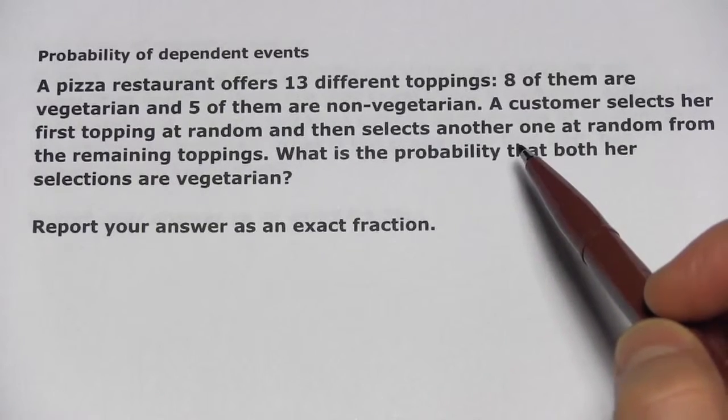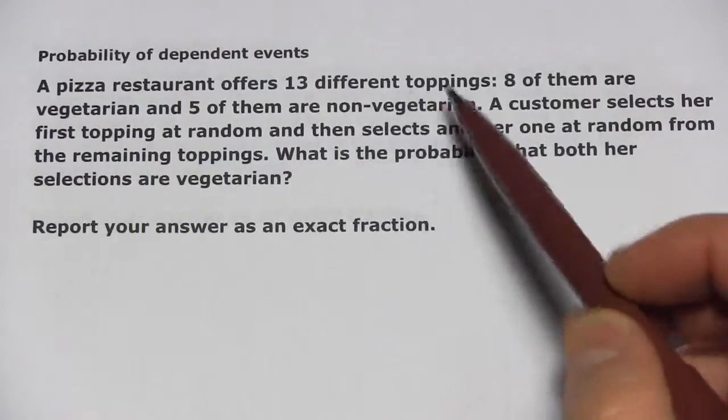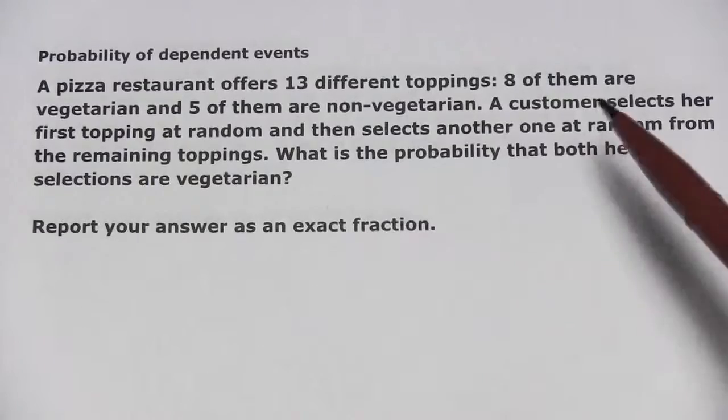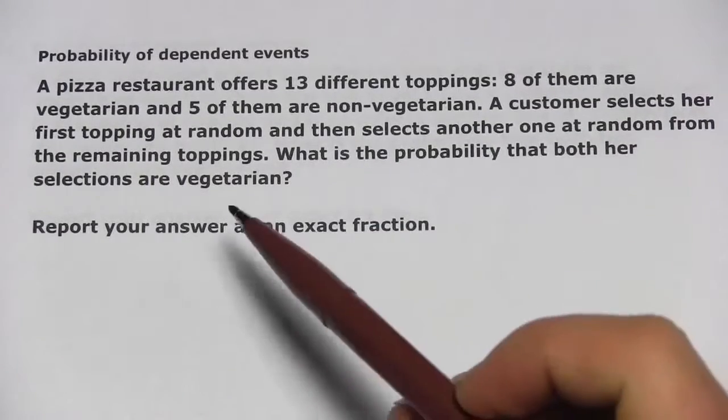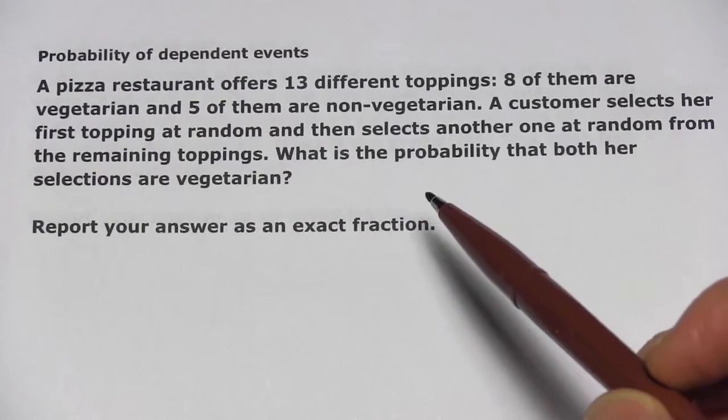The second time, there's only 12 left to choose from. So, the probability changes from one pick to the next. The question here is, what is the probability that both her selections are vegetarian?